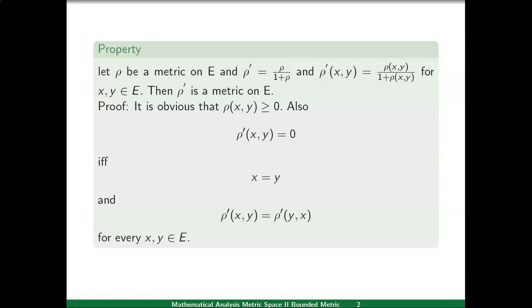The second property is to check that rho dash xy equals 0 if and only if x equals y. This is true because rho is a metric on E, so rho xy equals 0 if and only if x equals y. So rho dash xy equal to 0 means rho xy upon 1 plus rho xy equals 0, which implies rho xy equals 0, which implies x equals y. Conversely, if x equals y, then rho xy equals 0, making the expression 0, so rho dash xy equals 0.